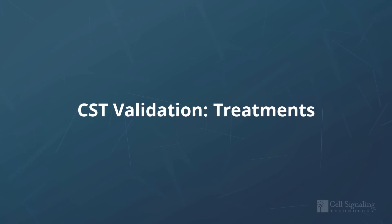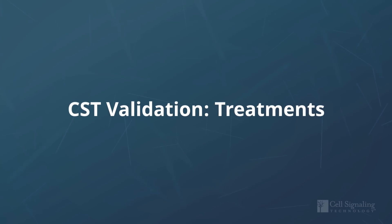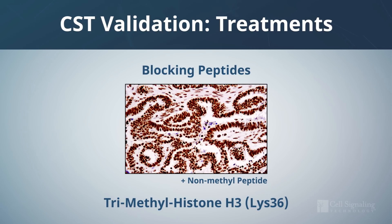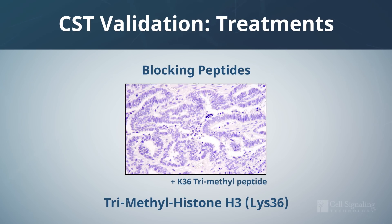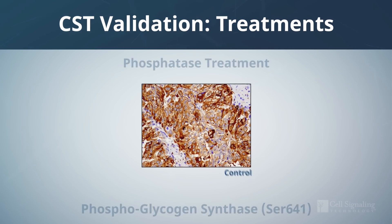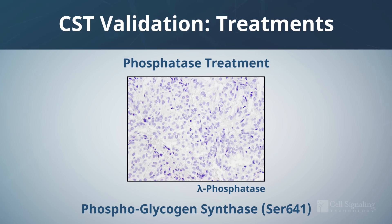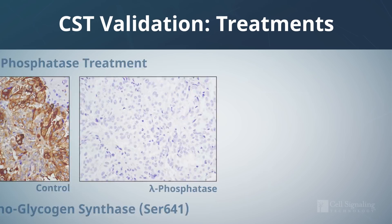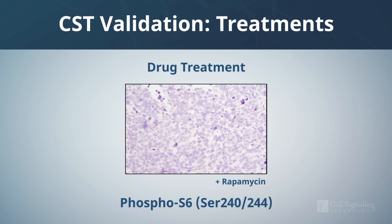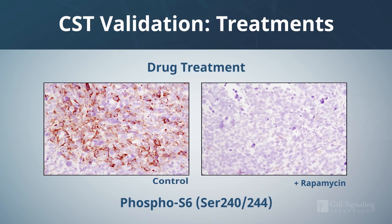Treatments with activators, inhibitors, or blocking peptides can be employed at appropriate time points in IHC to manipulate target expression and verify modification specificity. Incubation with blocking peptides can be used to test antibody specificity in IHC and to complement other validation assays. To test phospho-specific antibodies, phosphatase is applied to remove phosphate groups from proteins, confirming phospho specificity. Drug treatments prior to sample prep can be used to manipulate levels of target protein expression and post-translational modifications as well. In this example, rapamycin was used on a mouse xenograft system.